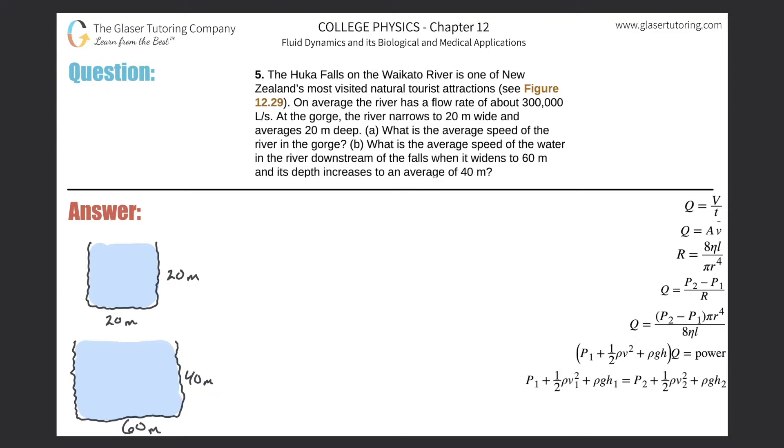Number five. The Huka Falls on the Waikato River is one of New Zealand's most visited natural tourist attractions. On average, the river has a flow rate of about 300,000 liters per second. At the gorge, the river narrows to 20 meters wide and averages 20 meters deep. Letter A: What is the average speed of the river in the gorge?